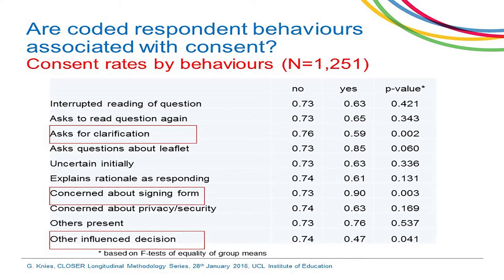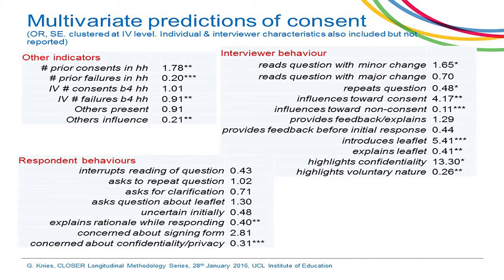Respondent asking for clarification is associated with lower consent, so avoiding that would be beneficial. Counterintuitively, if somebody is concerned about signing the form, that is associated with a greater consent rate — but that is because respondents are only presented with the form once they have already notionally given consent. The presence of others generally doesn't matter much, but when others do influence the outcome, it is typically negative, suggesting that isolating household members during interviews might help.